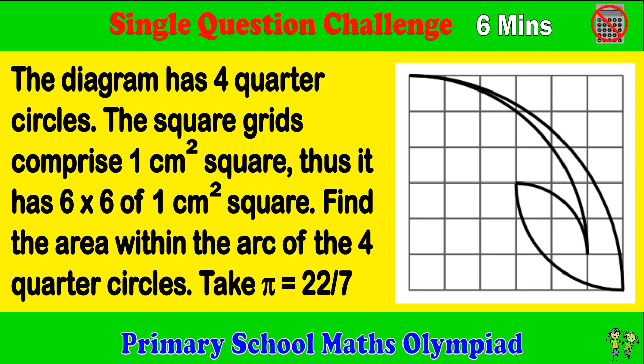The diagram has four quarter circles. The square grids comprise 1 cm² square, thus it has 6 by 6 of 1 cm² square. Find the area within the arc of the four quarter circles. Pi equals 22 over 7.